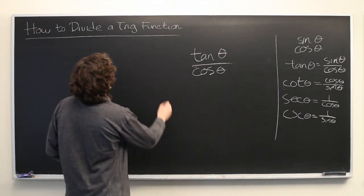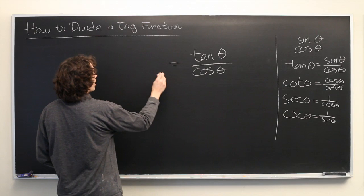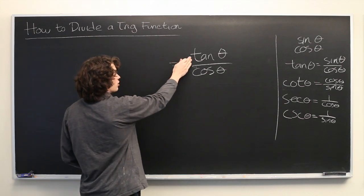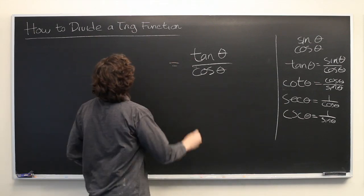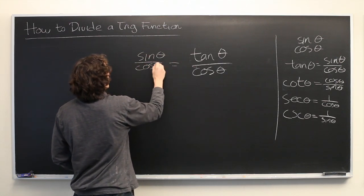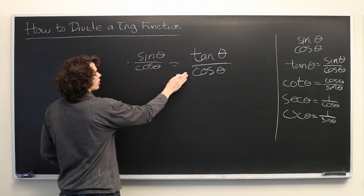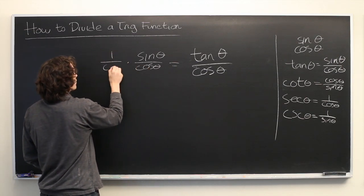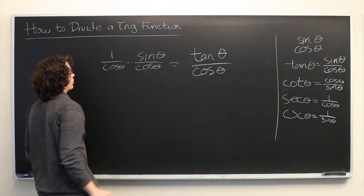So, let's work this way. We can see that if we rewrite tangent of theta as sine over cosine, what we get is sine theta over cosine theta times this denominator here, 1 over cosine theta.